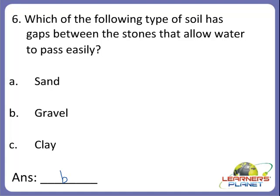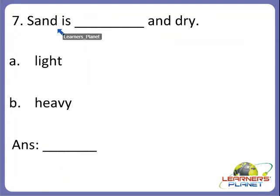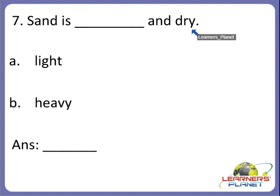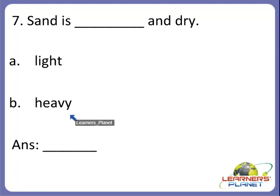Alright, children, is it clear to you? We'll move ahead with the next question. Sand is a type of soil. Sand is dash and dry — is it light or heavy? Yes, it is light and dry. A is the correct answer.